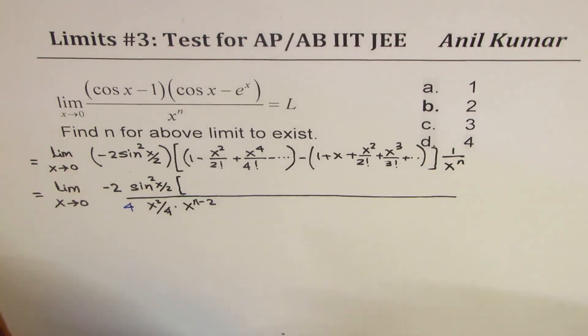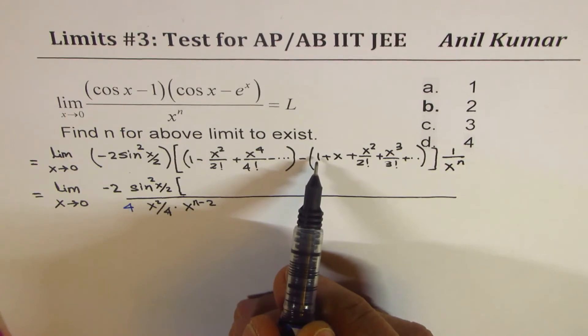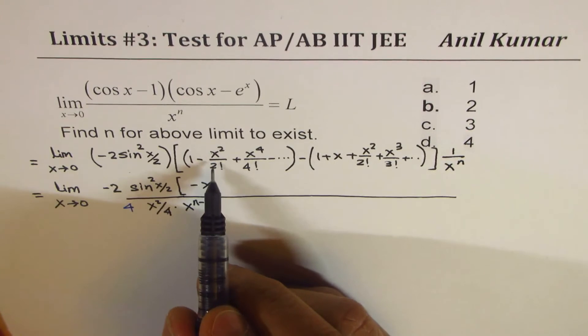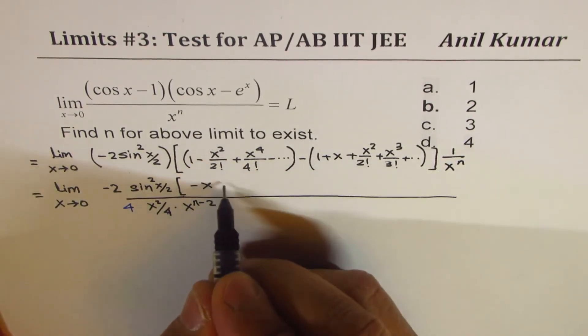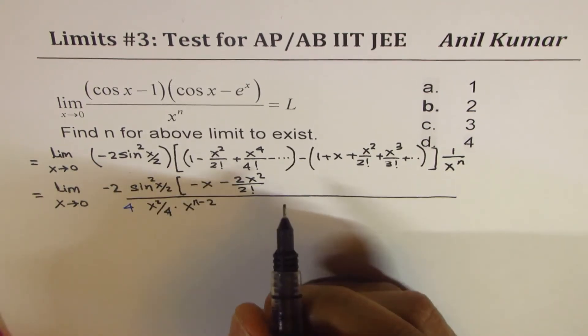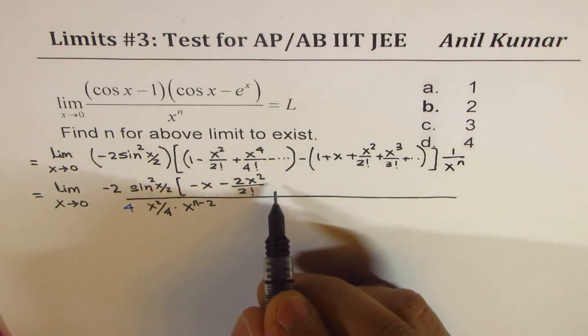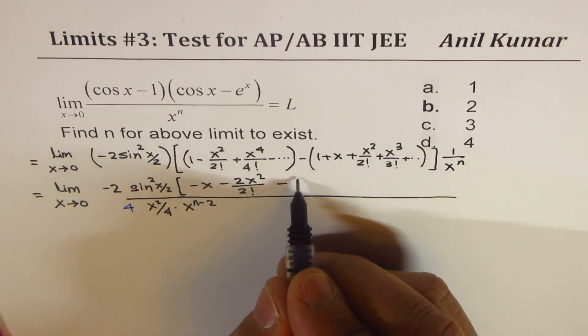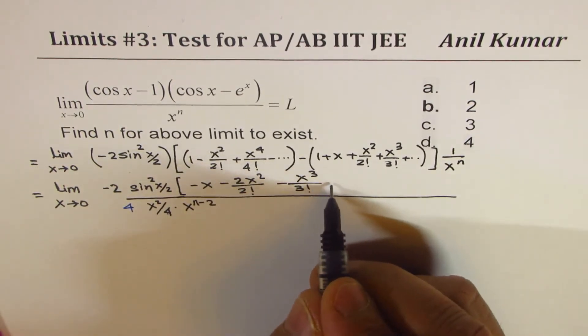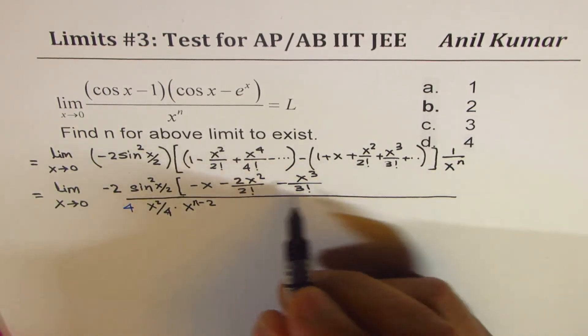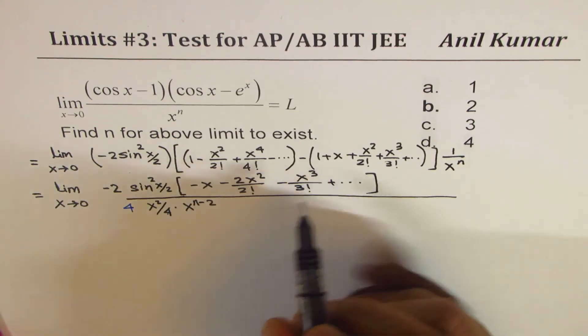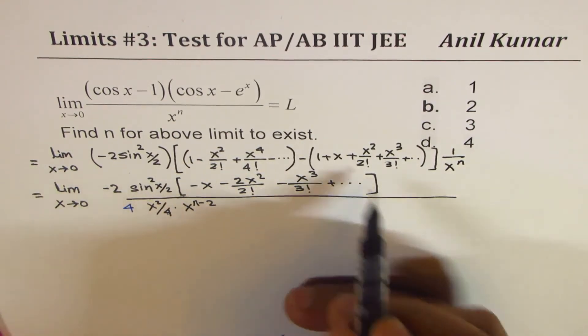Now let's see the numerator part. 1 - 1 is 0, and then we have -x. We have x². Both will be negative, so we get -2x²/2!. Then we have the term with cube, which is -x³/3!. And so on. So we have all these terms. I'm leaving this part since x approaches 0, they will become 0.